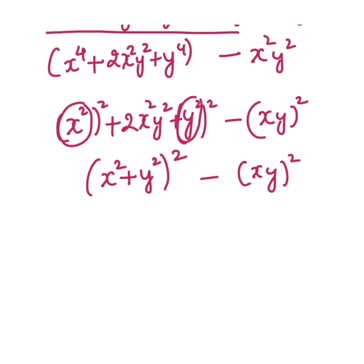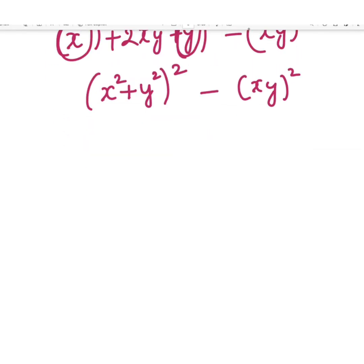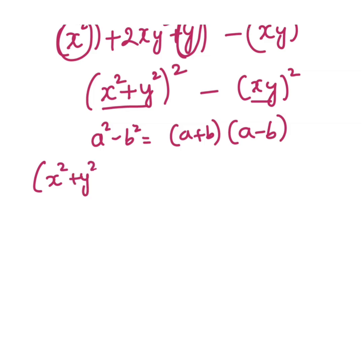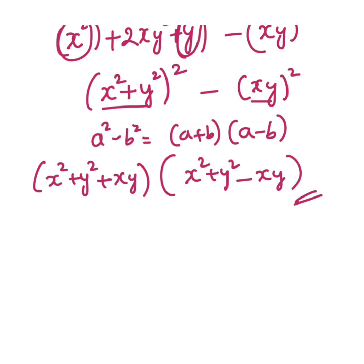Now again it is in the form of a formula. Which formula is it? It is a squared minus b squared, which equals a plus b times a minus b. So we will write this in the form of a plus b times a minus b. This whole term is considered to be a, and this term will be b. So it is a plus b times a minus b, that will be x squared plus y squared plus xy, multiplied by x squared plus y squared minus xy. So this is the final factorization.